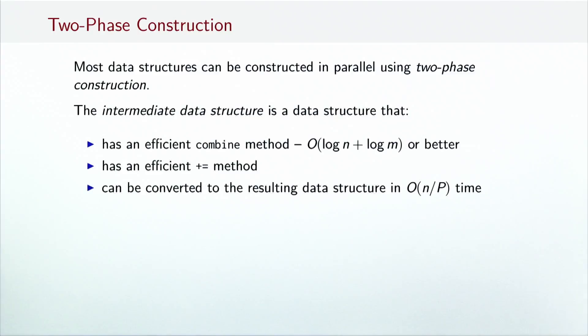Finally, it must be possible to convert the intermediate data structure into the resulting data structure in O(n/P) time, where N is the size of the data structure and P is the number of processors. In other words, the result method is allowed to copy the entire intermediate data structure, but this copying process must be parallelizable. Together, these properties allow building the resulting data structure in two phases.